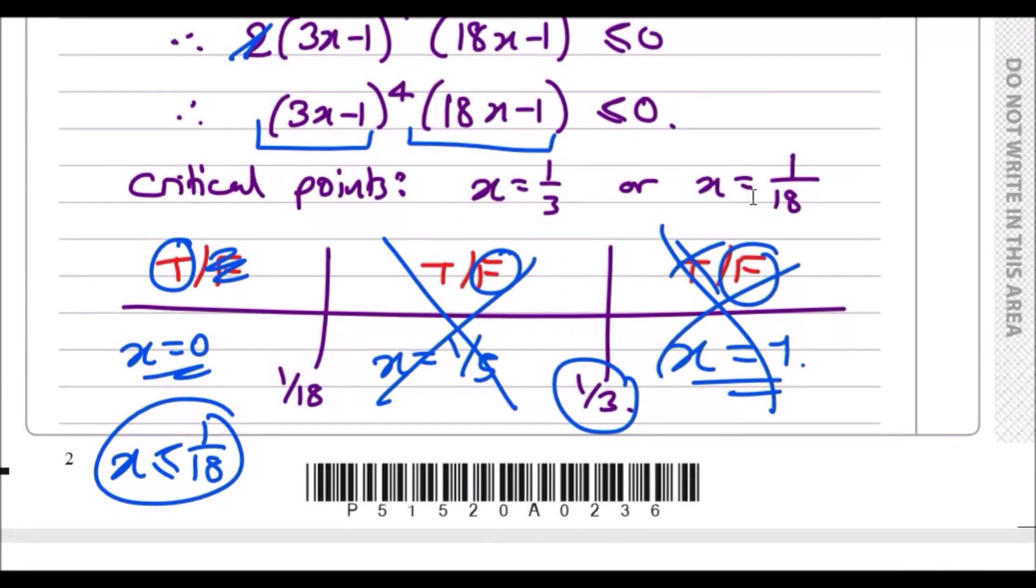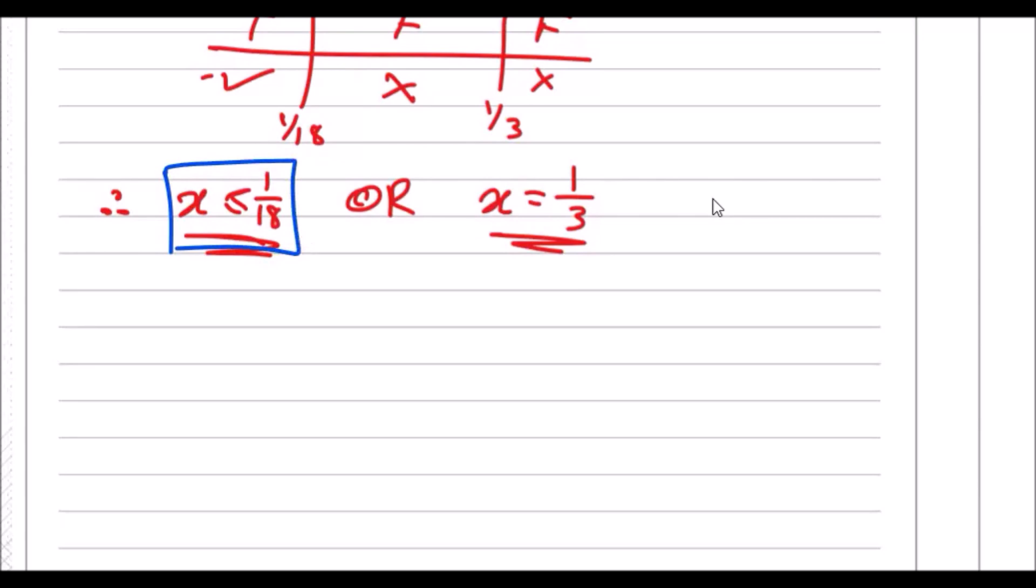These are the valid pairs: x ≤ 1/18 or x = 1/3. If you found this first question helpful, please give me a like and share with your friends.